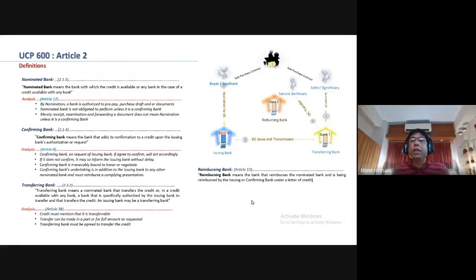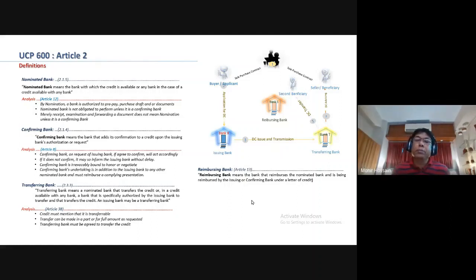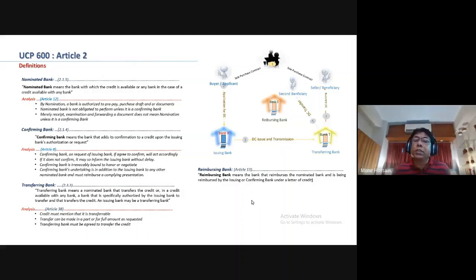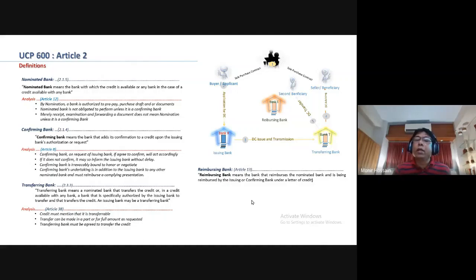Suppose the scenario is like this: Mutual Trust Bank Trade Services Division has issued a letter of credit to Barclays Bank London. The beneficiary submitted documents to Barclays Bank London. Mutual Trust Bank did not issue any reimbursement authorization earlier, so we will submit a payment instruction to HSBC Bank USA or Citibank USA, since the letter of credit is in US dollars. HSBC Bank USA or Citibank USA will then be the reimbursing bank.